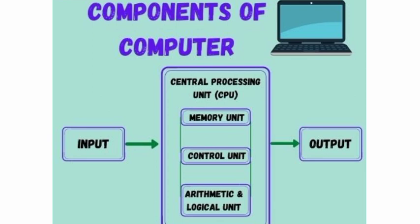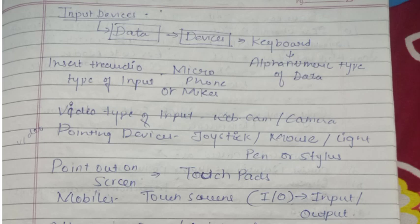Input devices include keyboards and microphones. Microphones are used to insert audio-type input, and keyboards are used for alphanumeric data. Video-type input is inserted through a webcam. Pointing devices include joystick, mouse, light pen, or stylus — S-T-Y-L-U-S. Mobile phones also help to insert data and are input-output type devices.